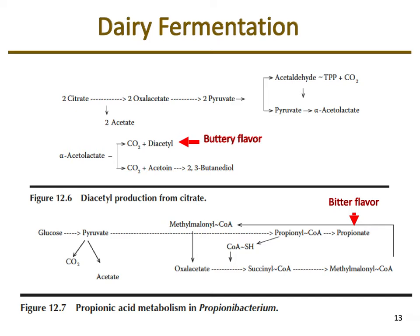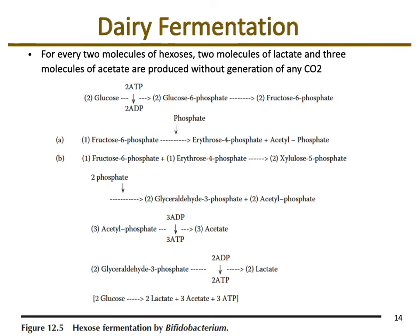In dairy fermentation, diacetyl is another important byproduct, produced from citrate. Diacetyl gives dairy products a buttery flavor, lending to the overall flavor profile. With propionibacteria metabolism, propionic acid is formed from glucose. Bifidobacterium undergoes a different fermentation pathway, producing two lactic acid and three acetic acid molecules along with three ATP — distinct from what we see with Lactobacillus bacteria.